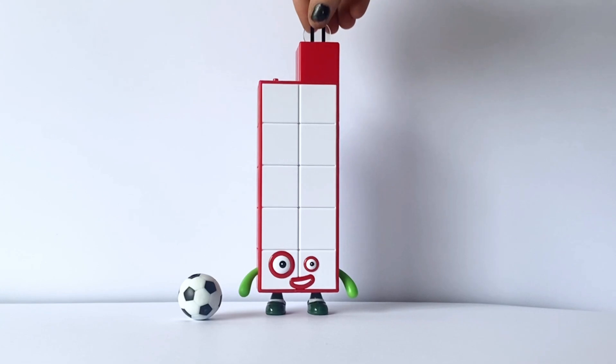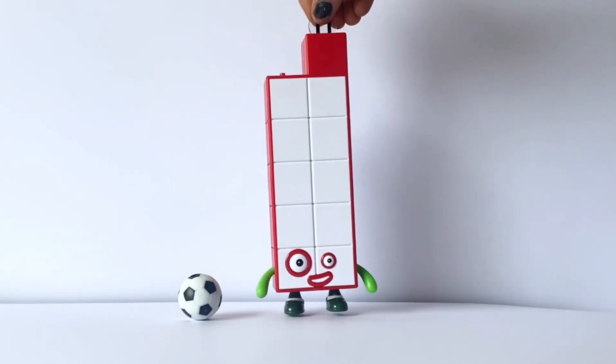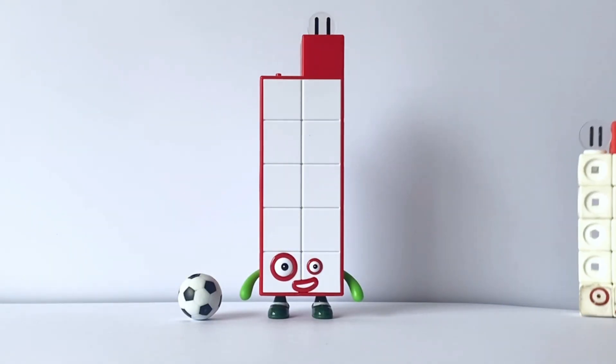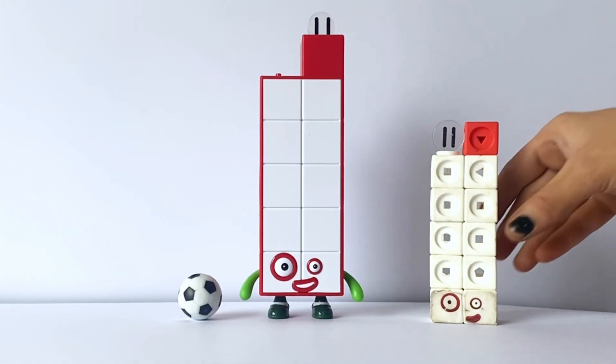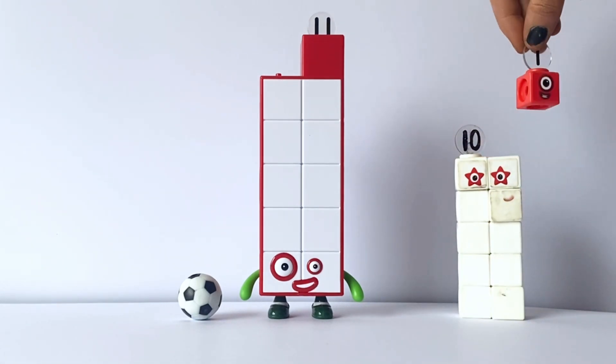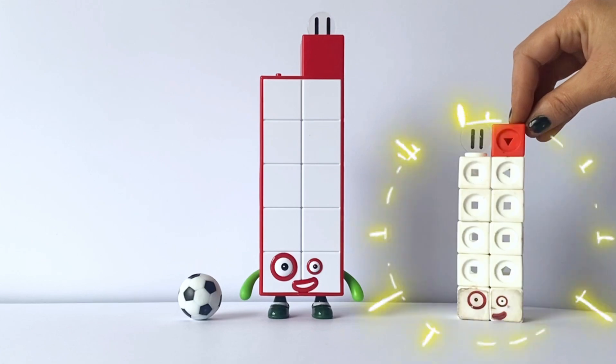And of course, NumberBlock 11 is 10 and 1, which is 11, which is the same for our NumberBlock Mathlink cube. 10 and 1 equals 11.